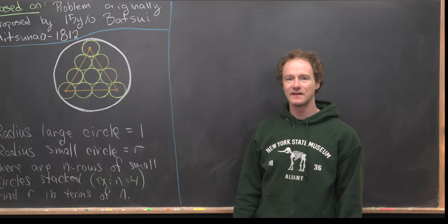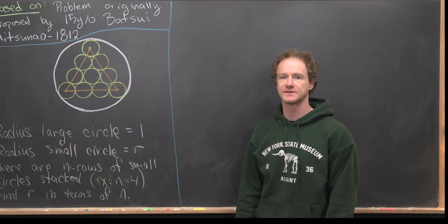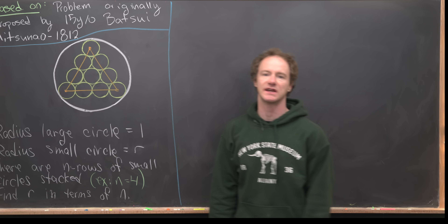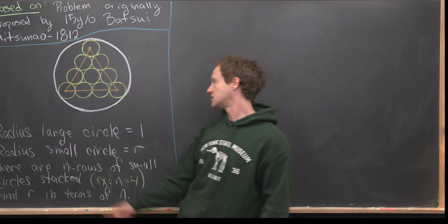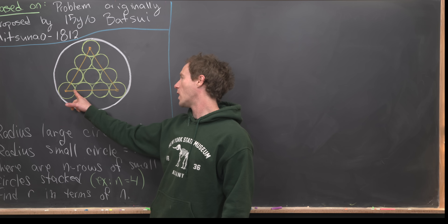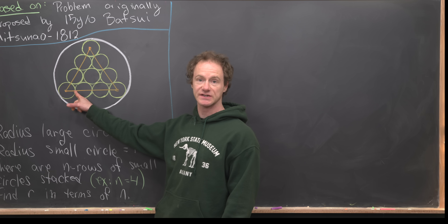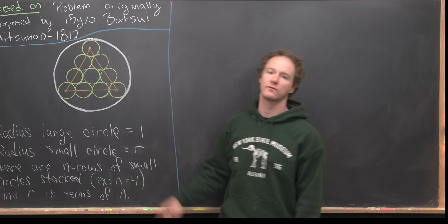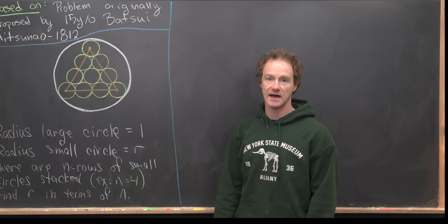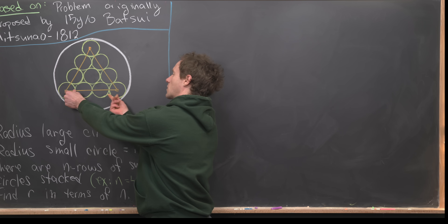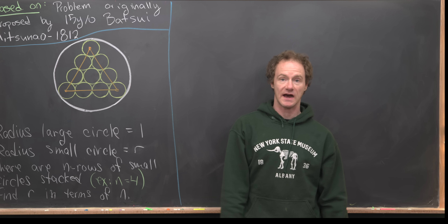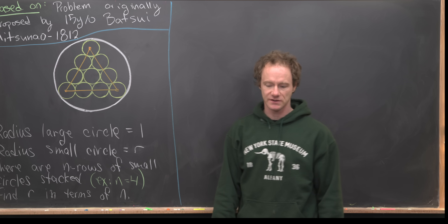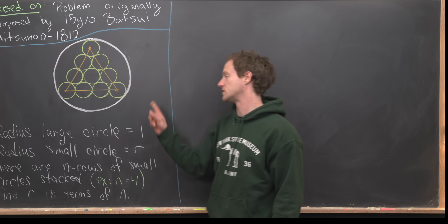Now we want to measure the side length of this equilateral triangle two different ways. The first way is by counting the number of radii of circles it passes through. We go through one radius from the vertex to the first intersection point, then two radii for each interior circle, then one radius at the end. The outside two circles each contribute one radius, while the inside circles contribute two radii each. How many inside circles are there? Two less than the total number of circles on that side.